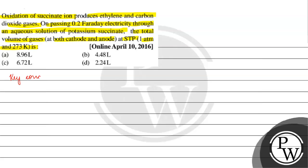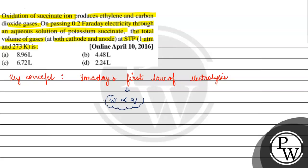The key concept for this question is Faraday's first law of electrolysis. Faraday's first law of electrolysis states that the amount of substance deposited or liberated at any electrode is directly proportional to the amount of electricity that has been passed through the electrolytic solution.